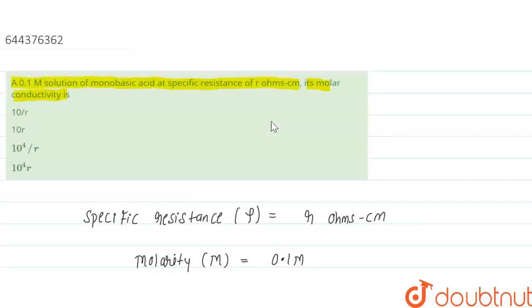The correct option is option number three: 10 raise to the power 4 upon r. I hope this answered your question. Thank you.